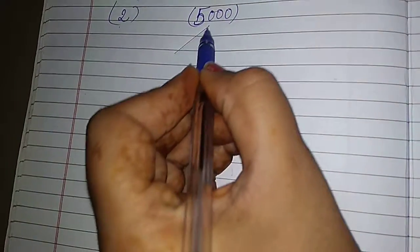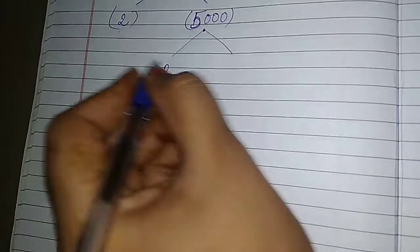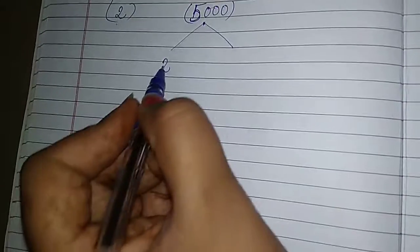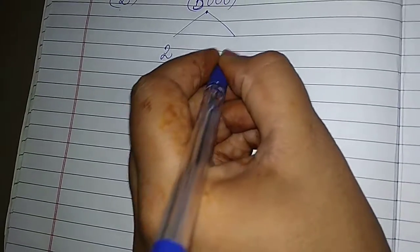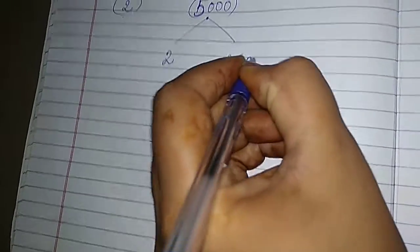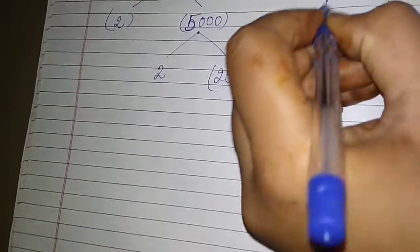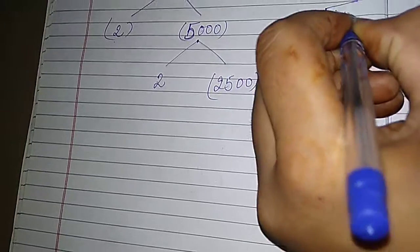Now this number we divide further. 2 times 2 is 4. Then 2 times 5 is 10. Then along with 2 remaining zeros. Otherwise you can divide simply 5000 divided by 2, then you get this one.